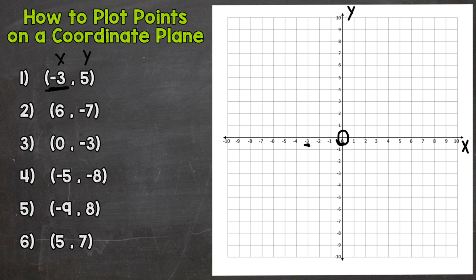And then we need to go up 5 because we have a positive 5. So over negative 3, up 5. Always over, then up. And where the negative 3 and the 5 intersect, we plot our point. And I'll label this negative 3, 5.